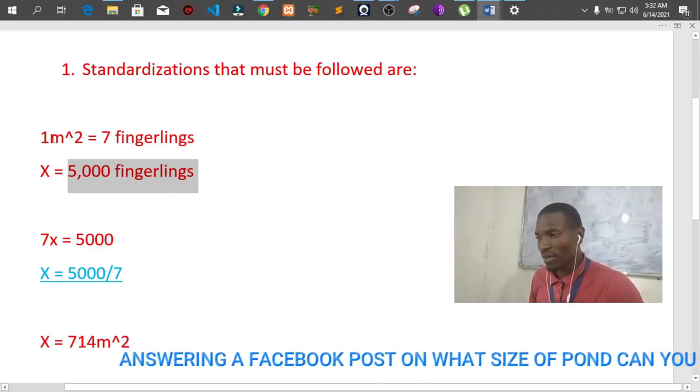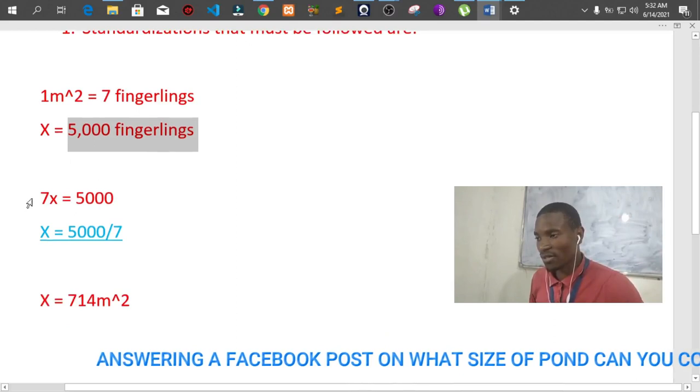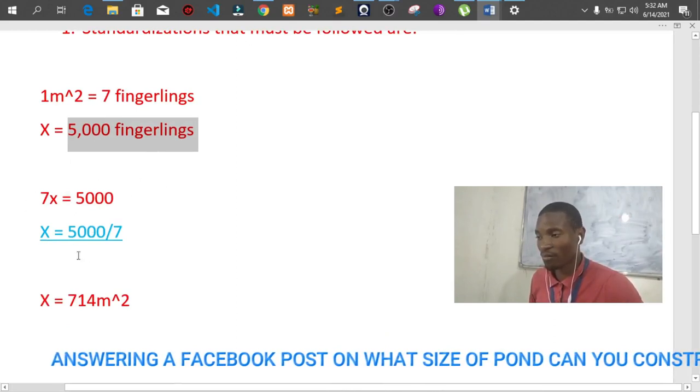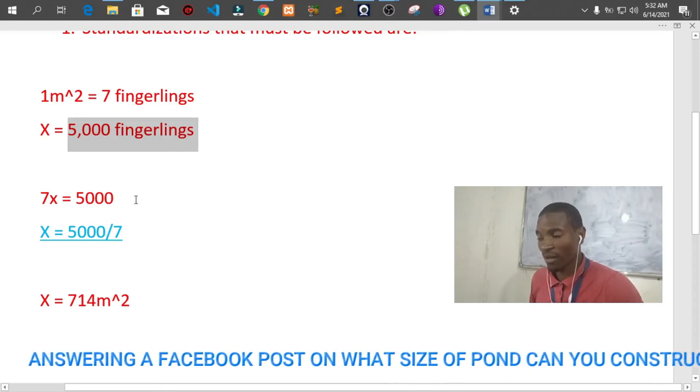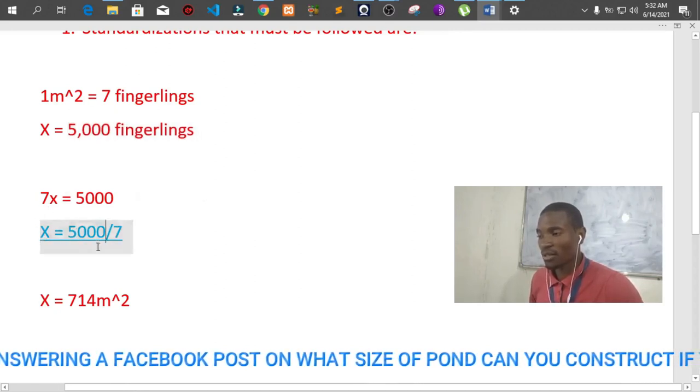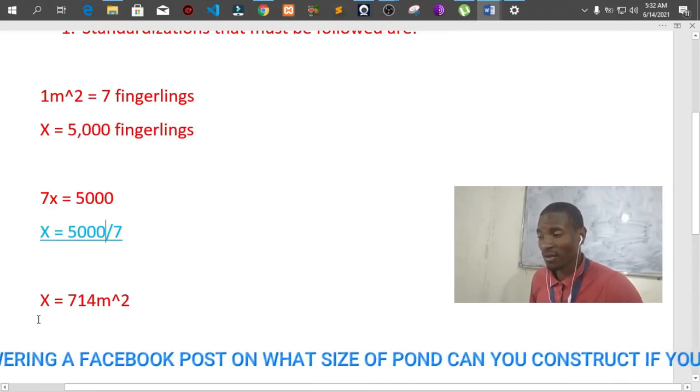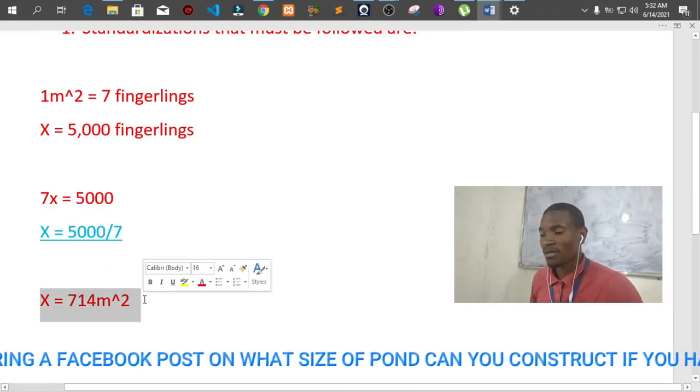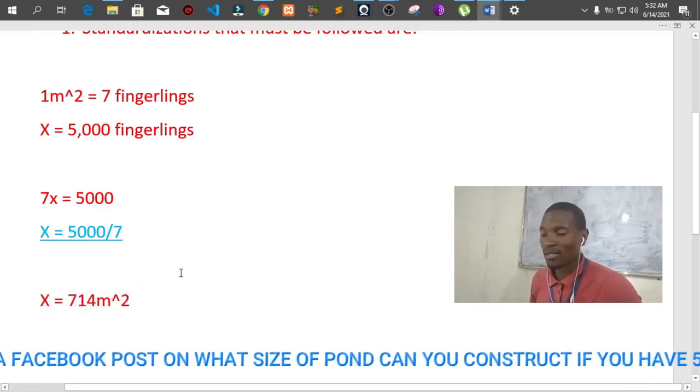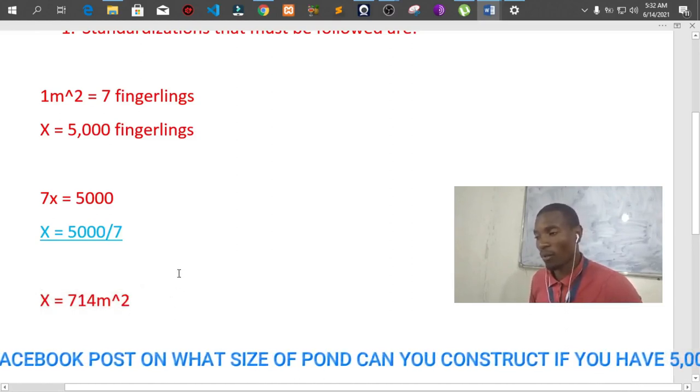If we do the simple math, this is going to give us 7X equal to 5,000. So for X, you do that, and then 5,000 divided by 7, this is going to give you 714 meters square size, or rather the pond that you can construct.